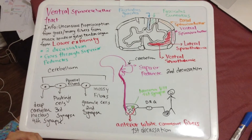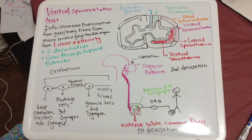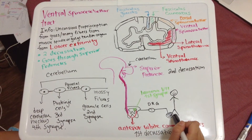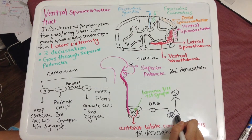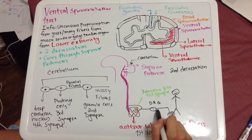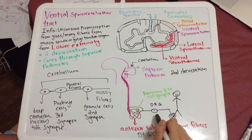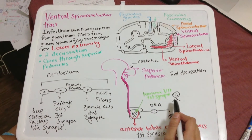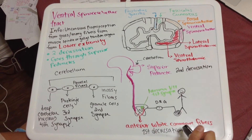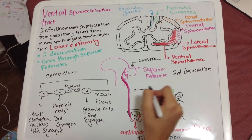In summary: the ventral spinocerebellar tract carries unconscious proprioception from many muscle spindles and Golgi tendon organs of the lower extremities (below C8). The signal travels to cell bodies in the dorsal root ganglion, which contain pseudo-unipolar neurons. It then enters the spinal cord, synapses at lamina 7 (first synapse), and immediately decussates via the anterior white commissure (first decussation) to the contralateral side.